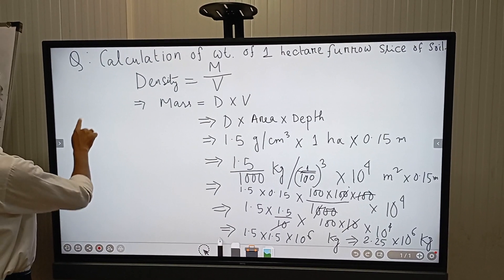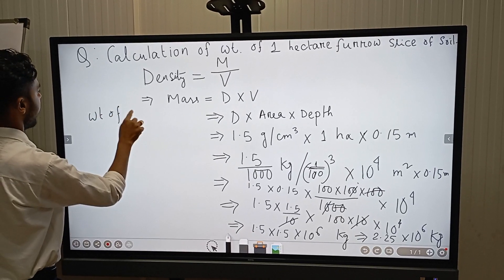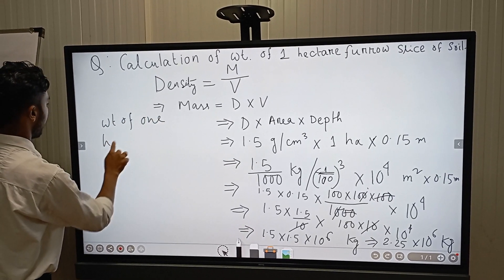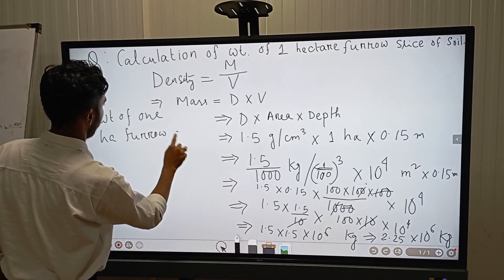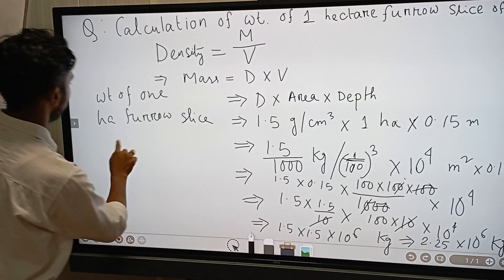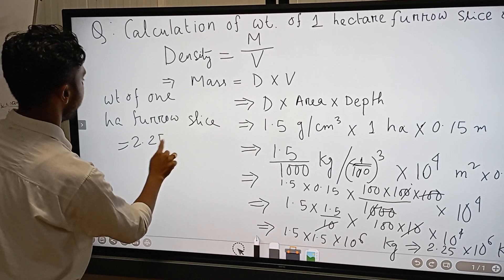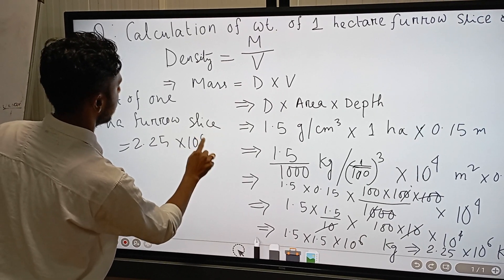So the weight of 1 hectare furrow slice of soil is equal to 2.25 times 10 to the power 6 kg.